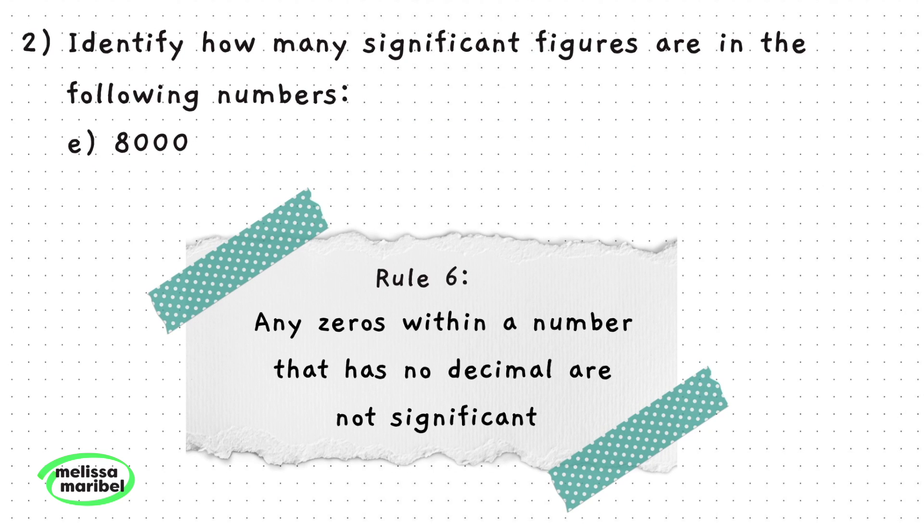Part E follows rule 6, where any zeros within a number with no decimal do not count as sig figs, so only the 8 counts. There is only one sig fig.